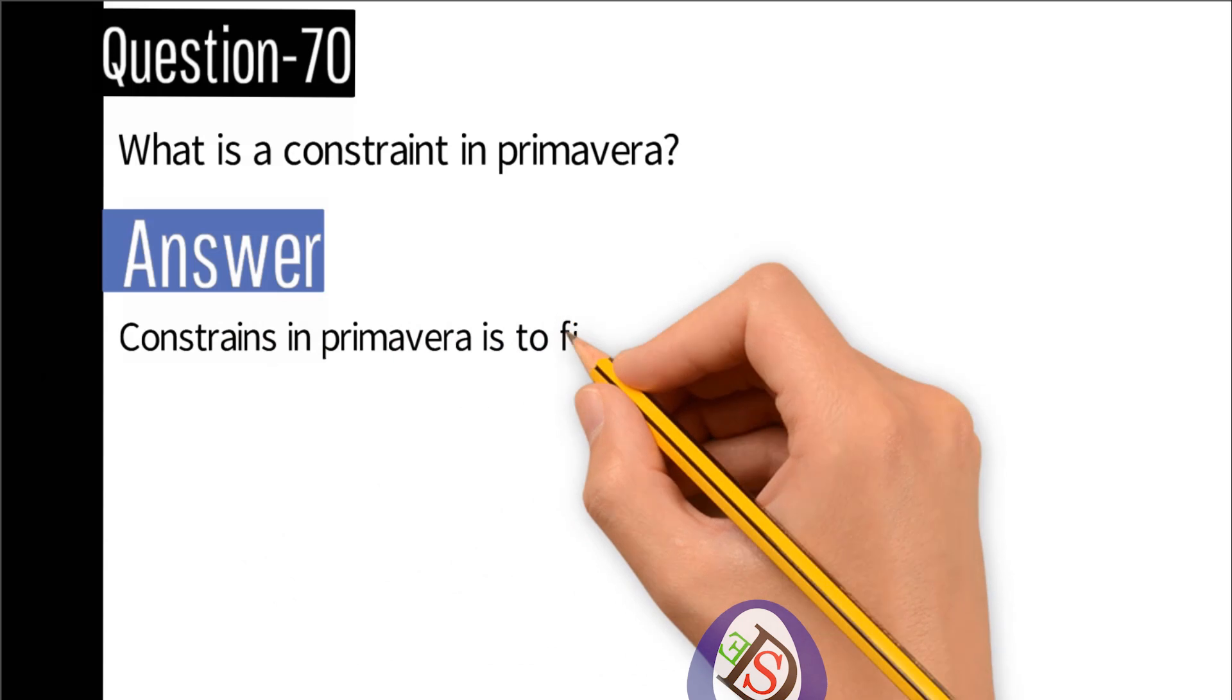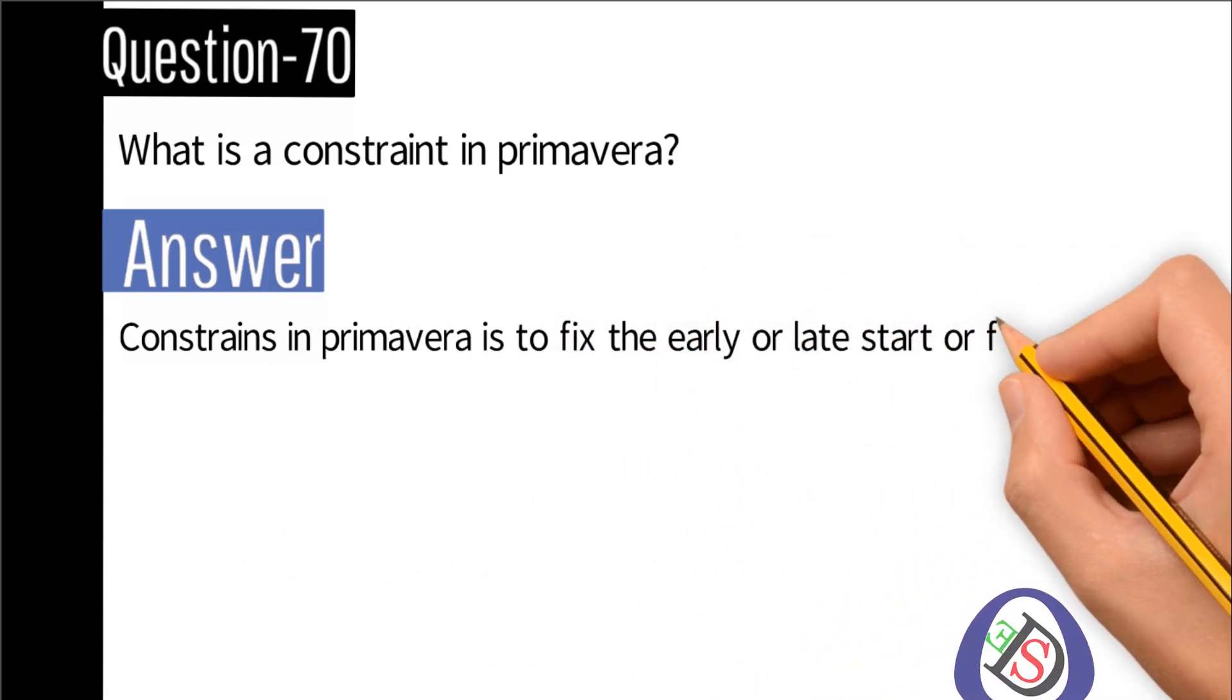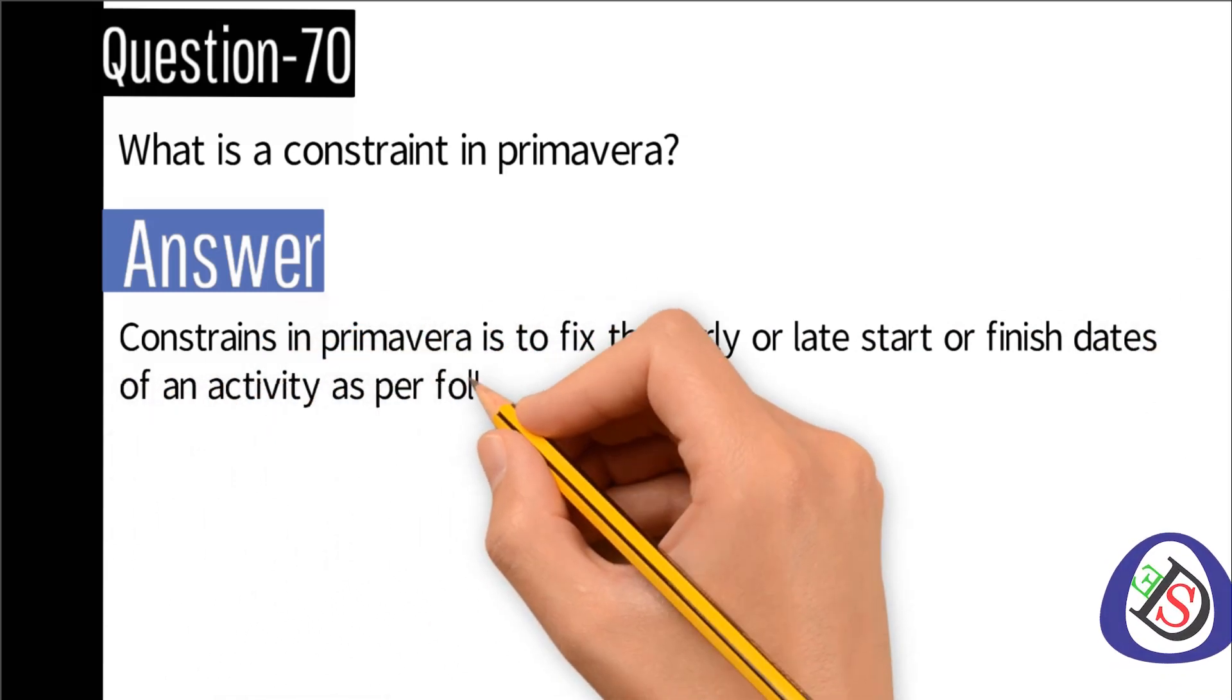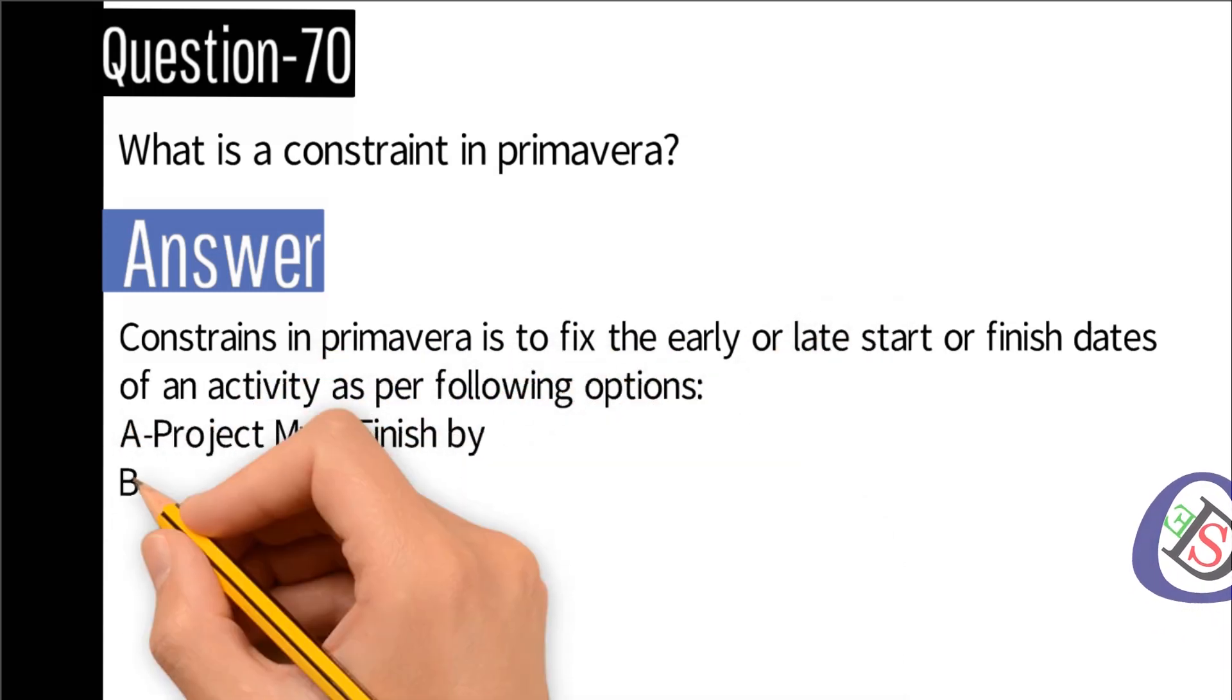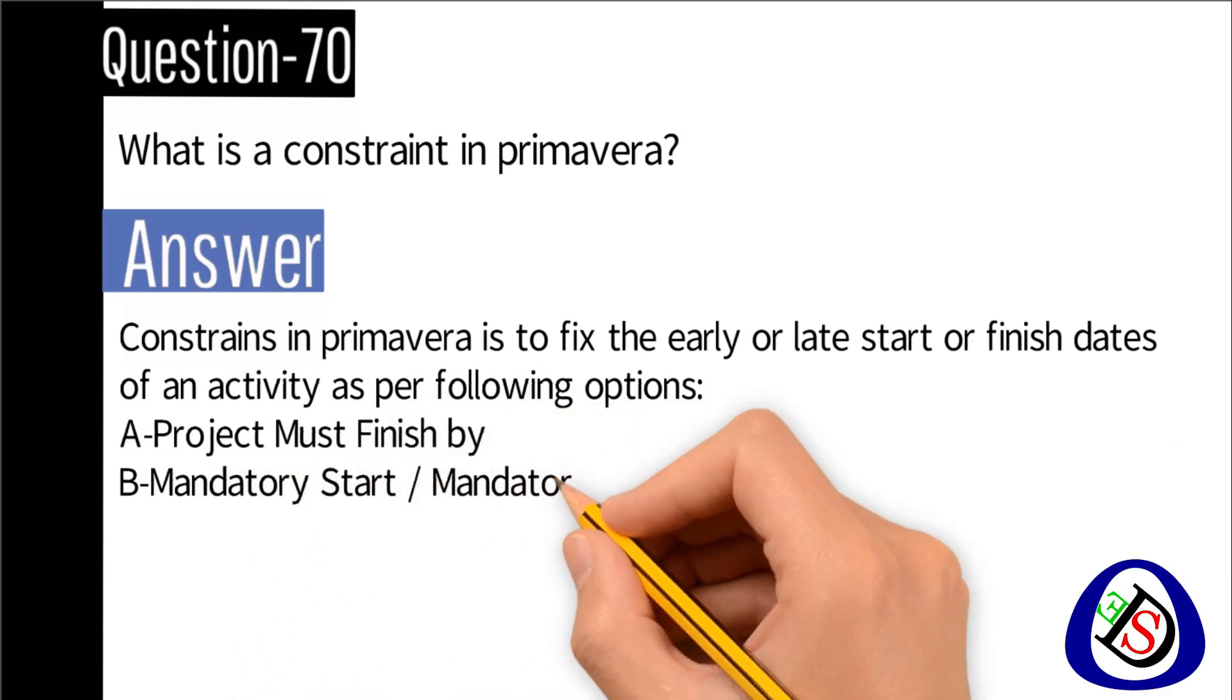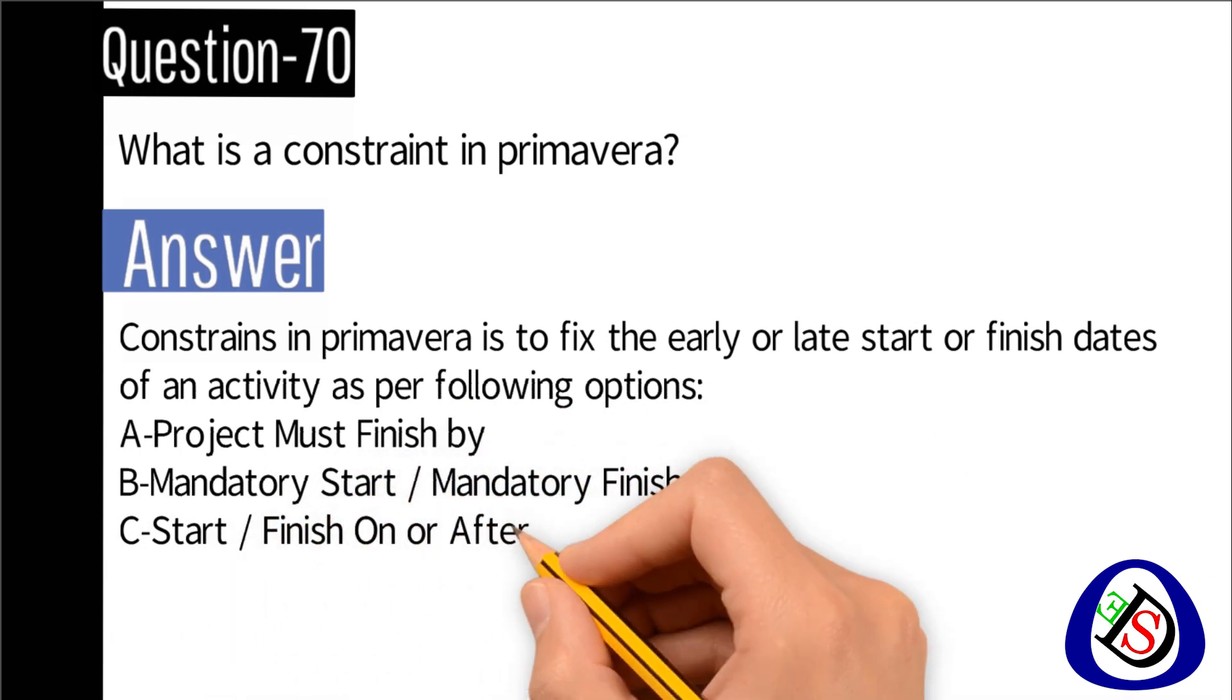Question number 70: What is a constraint in Primavera? Answer: Constraints in Primavera is to fix the early or late start or finish dates of an activity as per following options. A project must finish by.